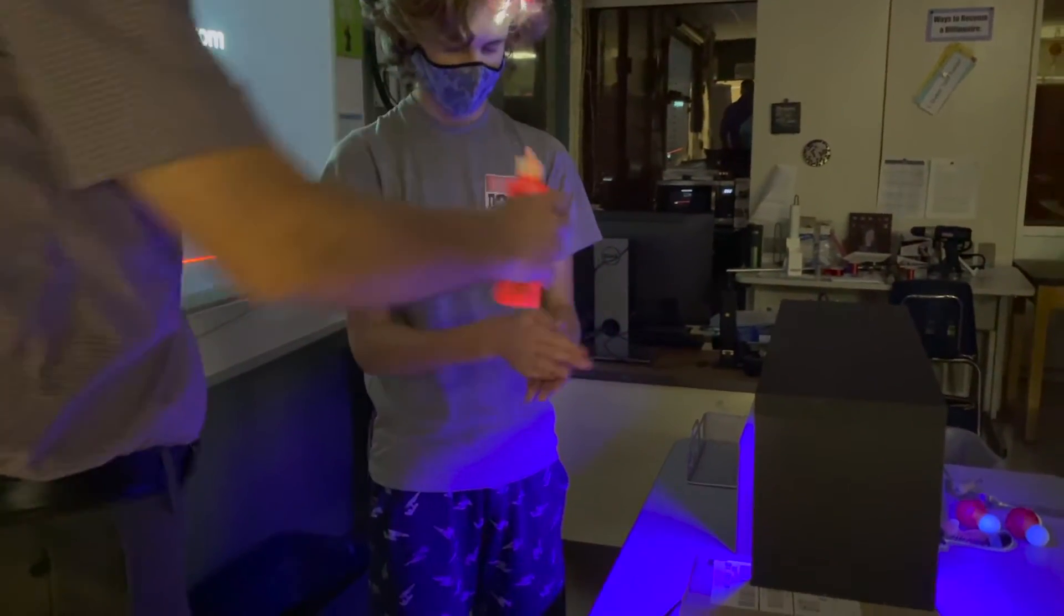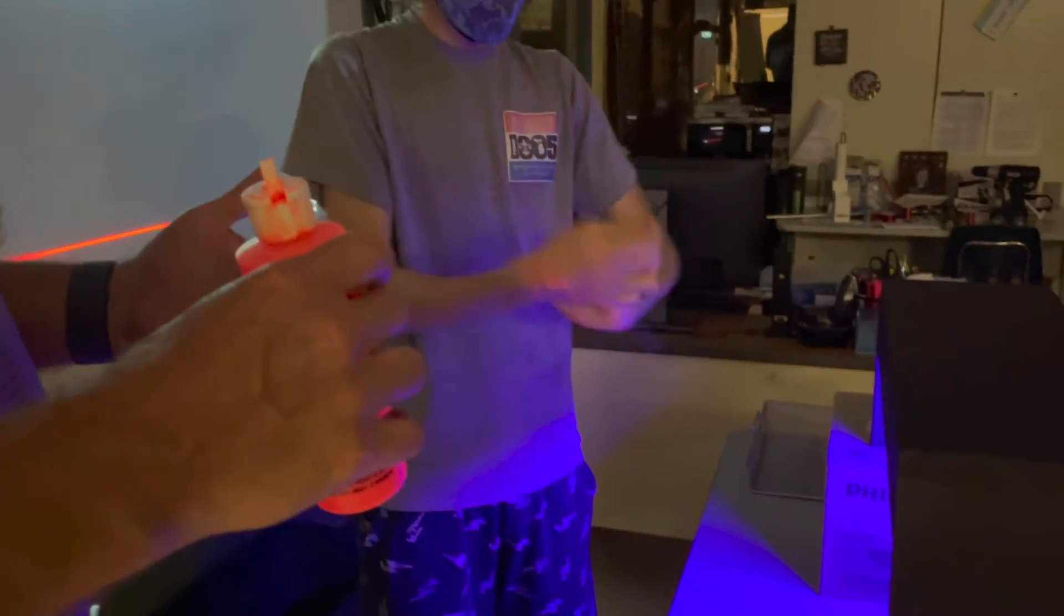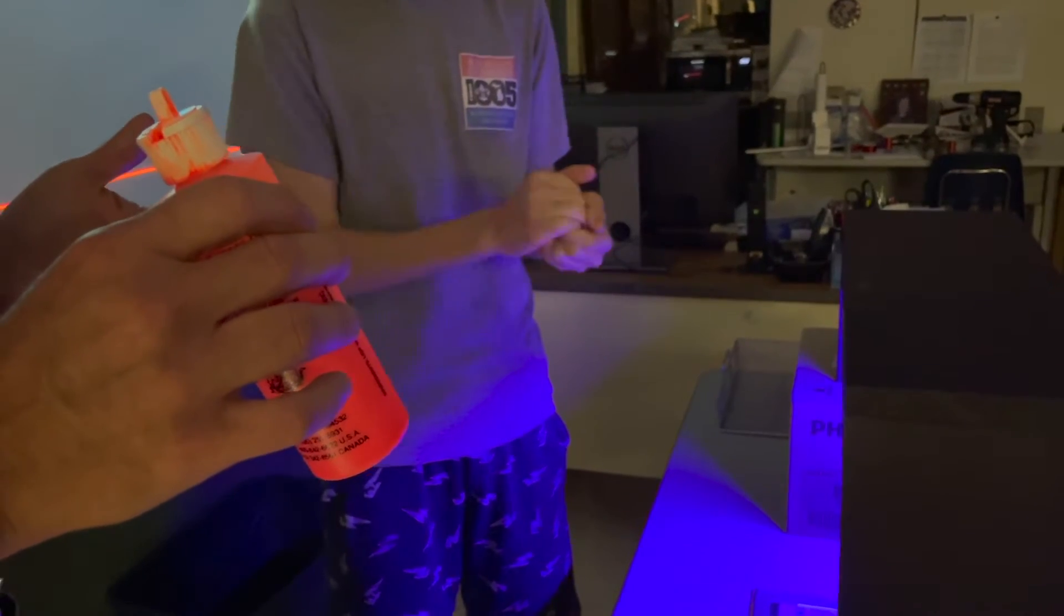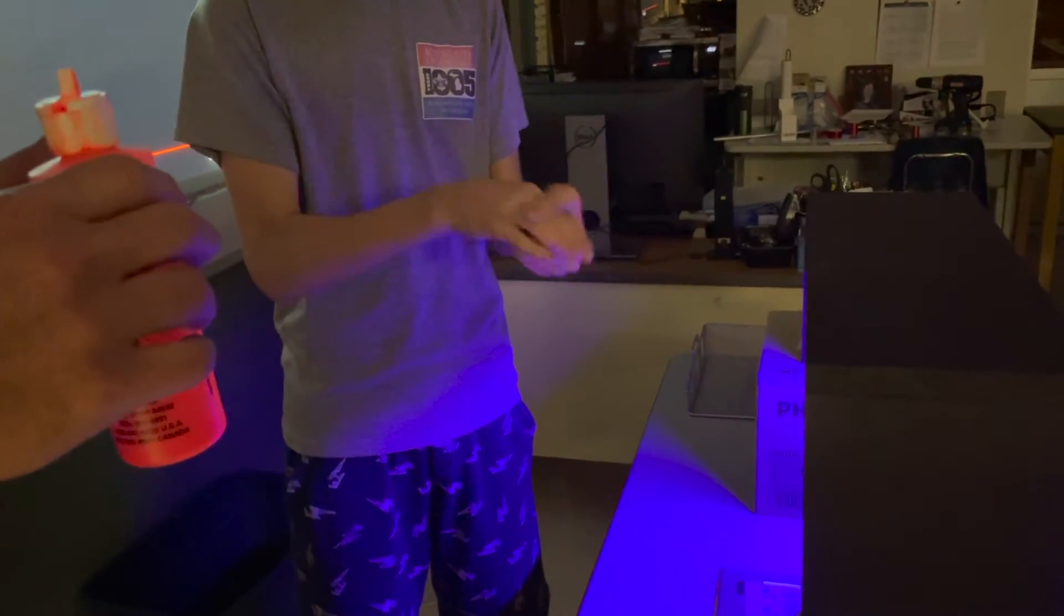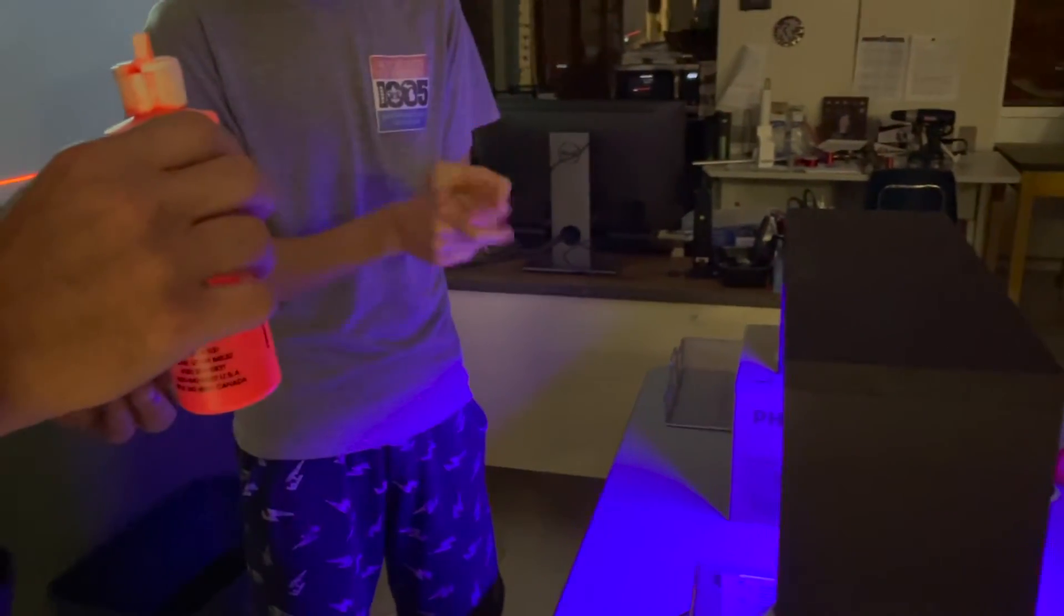Rub it in really good all over, between the fingers, all the way down to your wrists, front hands, back hands. You should be able to spread it around enough where you really can't even see it on your hands anymore. Now put your hands under the light.